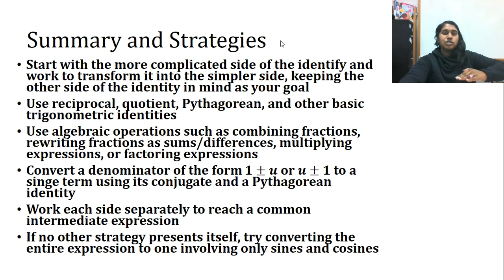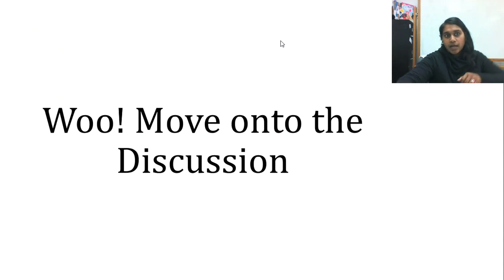Here's a summary of those strategies. Again, use your identities. Use algebraic operators such as fractions. The conjugate is so important here. Sums and differences we'll see eventually, and least common denominators are so important here. Work each side separate if you can't find a common intermediate expression, and at the bare minimum, convert everything to sine and cosine. You're going to move on to the discussion, but here is your last question, and congratulations, you made it to the end of the video.